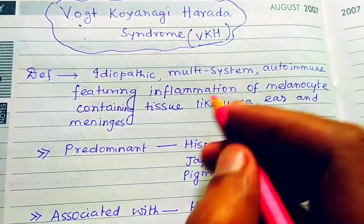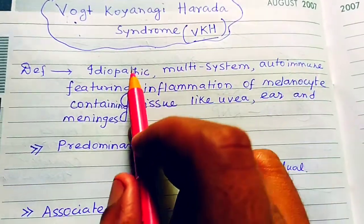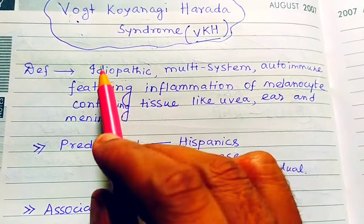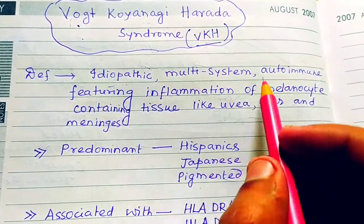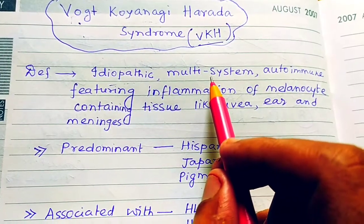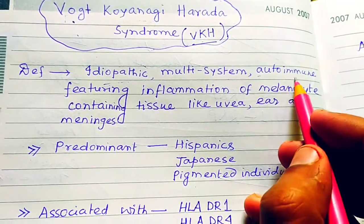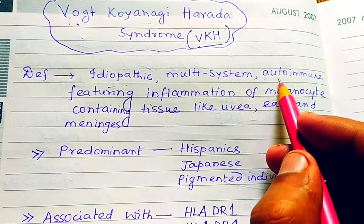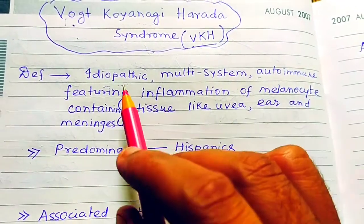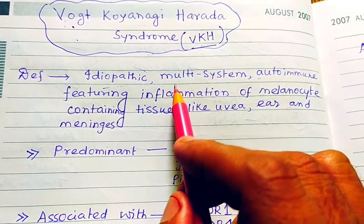The definition: VKH syndrome is an idiopathic multi-system autoimmune condition. The cause is unknown and many systems are involved.